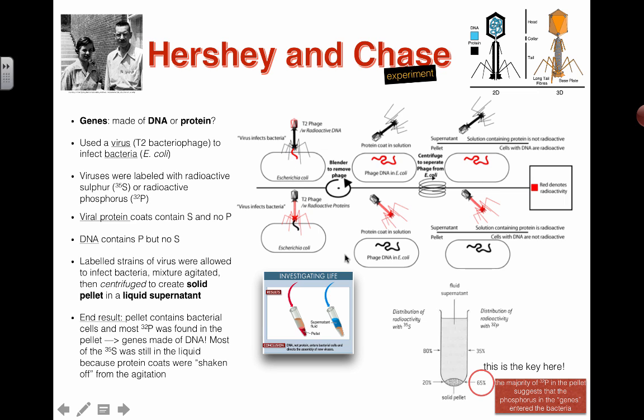When you have all these cells and viruses, they're super tiny. You can't actually see all the bacteria, so we have to figure out some other way to see where the actual radiation is being given off. Basically we allow this entire reaction to happen. We label the DNA with radioactive phosphorus and the protein with radioactive sulfur. We allow them to infect bacteria and mix it all up.